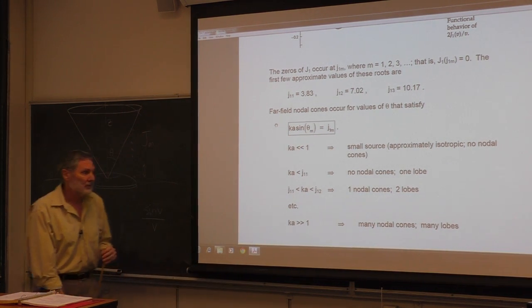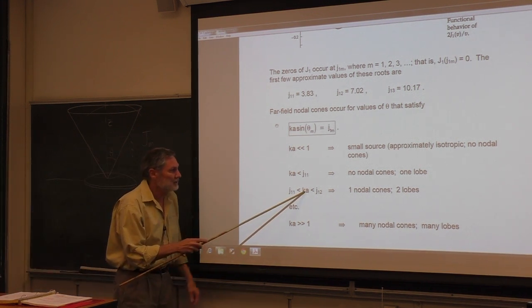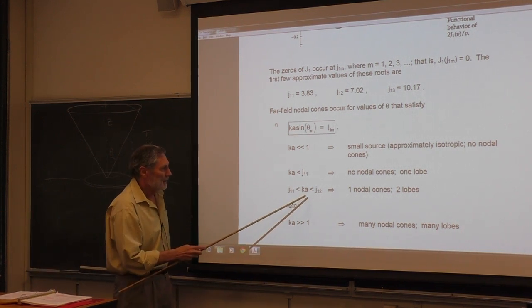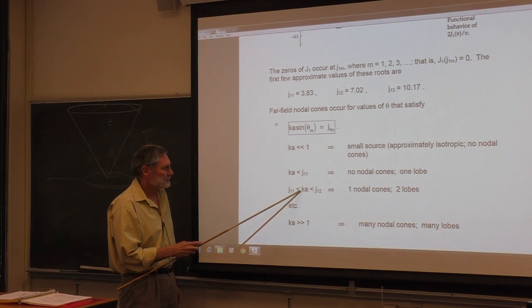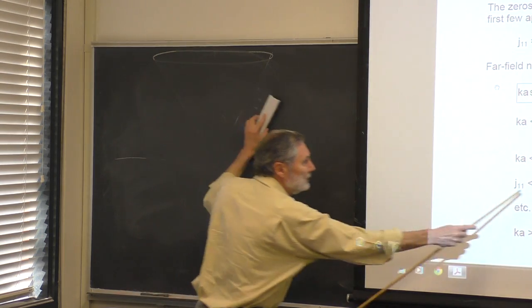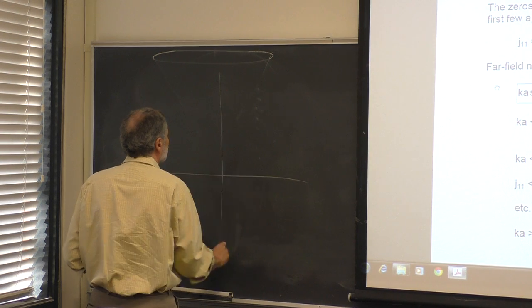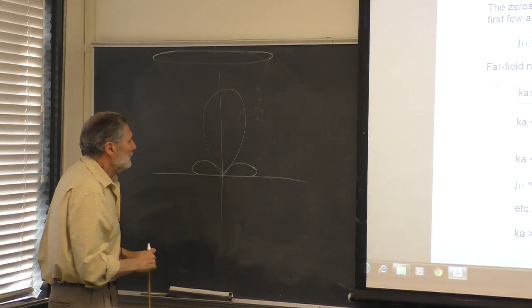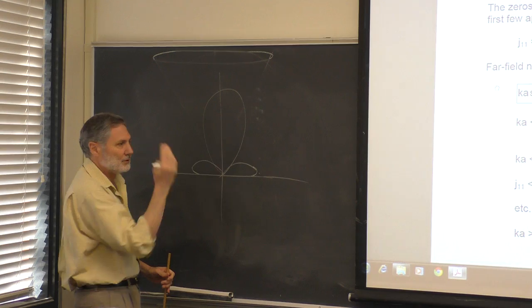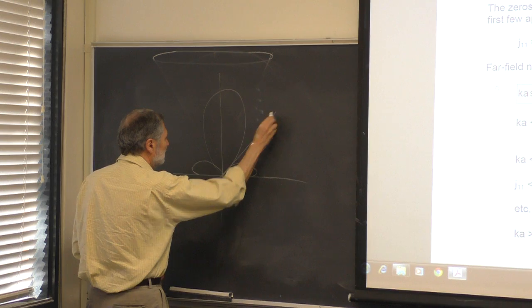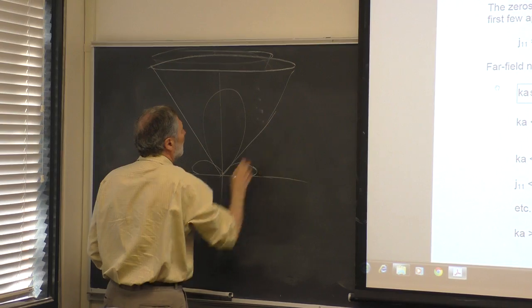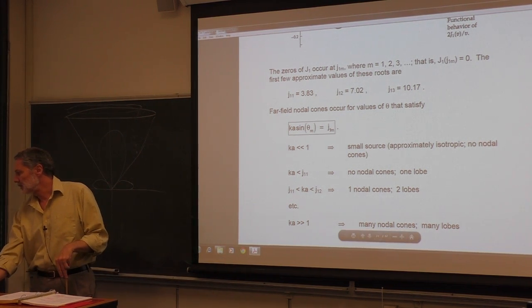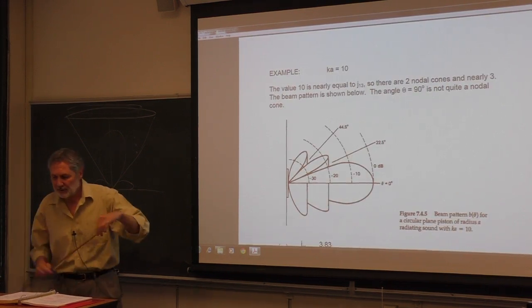As you decrease the wavelength further (increasing ka), you get patterns similar to the line source — a main lobe and side lobes with nodal cones in between. The radiation pattern will have one nodal cone, then more as ka increases. When ka is much greater than 1, there will be many densely packed nodal cones.